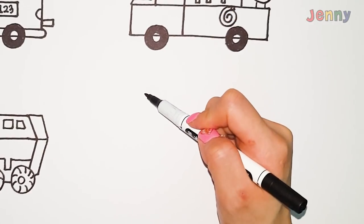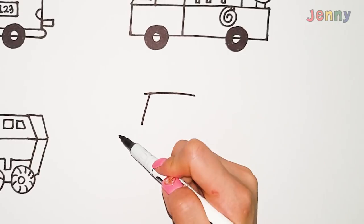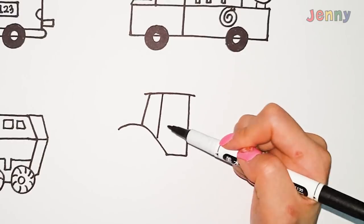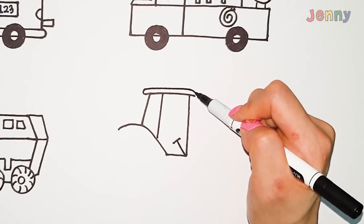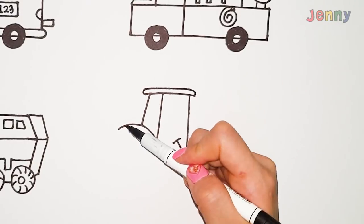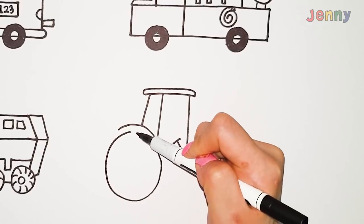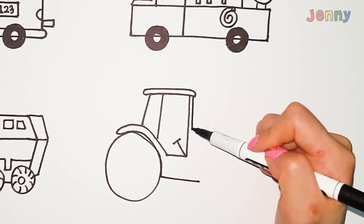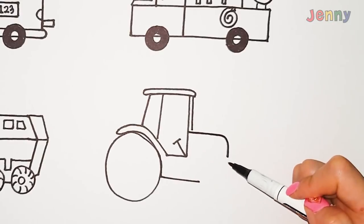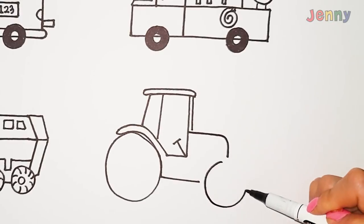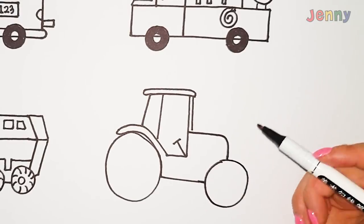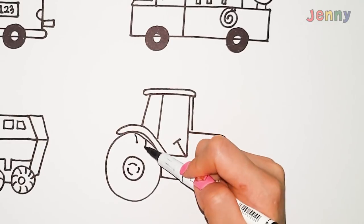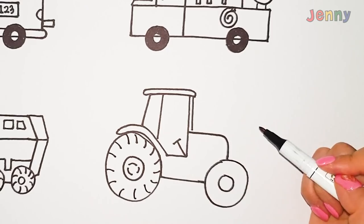Lastly, Tractor. Friends on the bus say how are you, how are you, how are you. Friends on the bus say how are you, all through the town. The wheels on the bus go round and round, round and round, round and round. The wheels on the bus go round and round, all through the town.